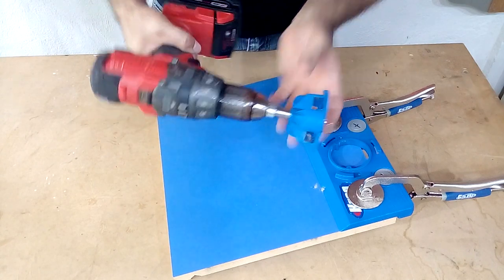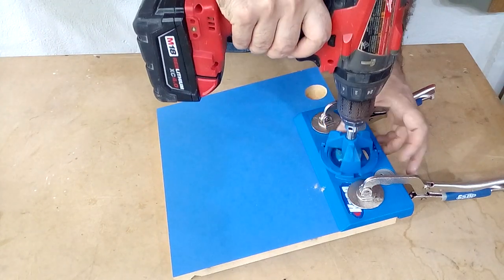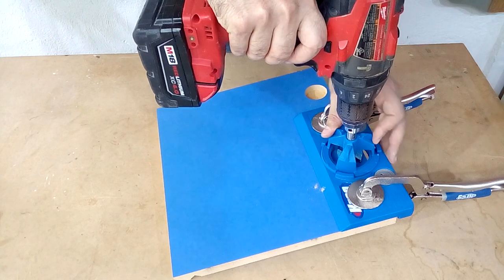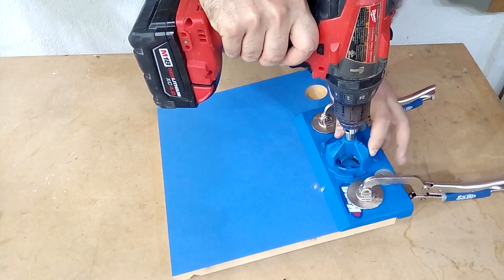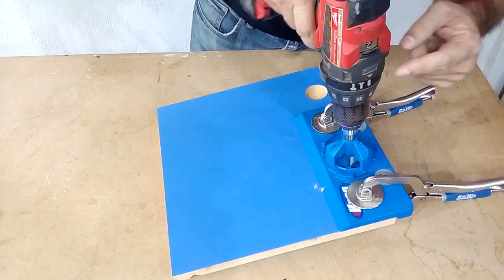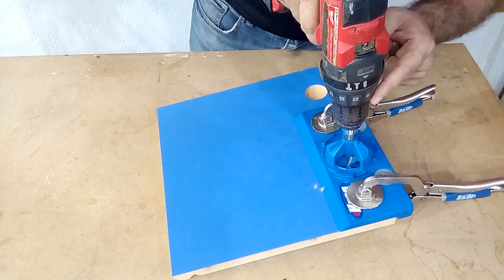When everything is attached, we place the drill with the bead in our jig. Before drilling, remember to verify that your drill has the drilling function selected.